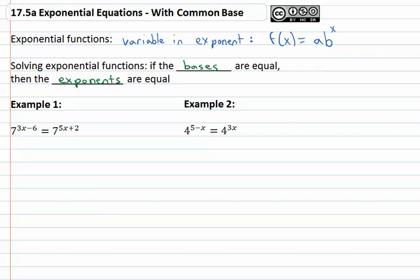So for example one here we've got seven to the three x minus six equals seven to the five x plus two. Because the bases are the same, we can also conclude that these exponents must be the same as well.